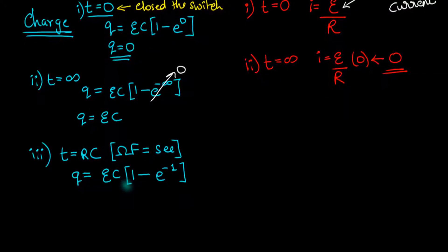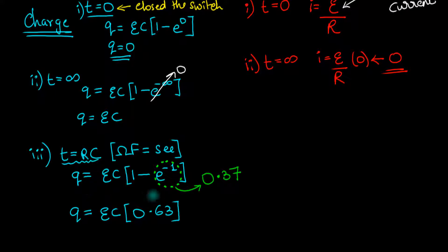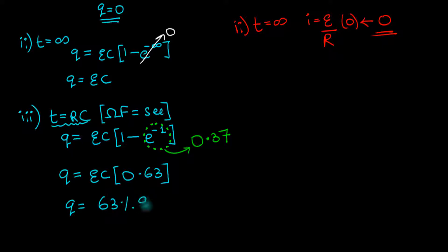The charge becomes EC times 1 minus e to the power minus 1. E to the power minus 1 is a number I tend to remember: it's 0.37. So we get charge Q equal to EC times 1 minus 0.37, which is just 0.63. This tells us that if you wait for a time exactly equal to RC, the charge climbs up to 63% of the maximum charge, EC. Since voltage has the same relationship, the voltage across the capacitor also climbs up to 63% of the maximum voltage.